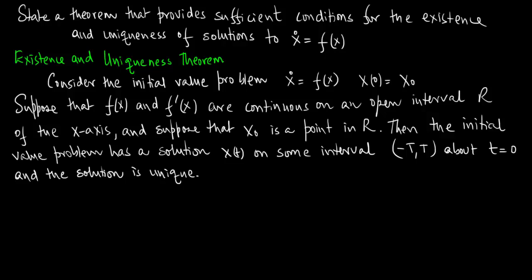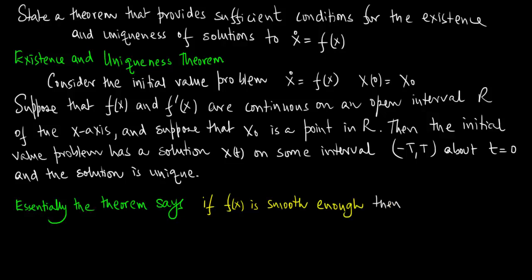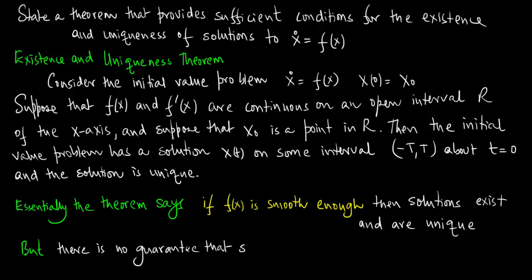Let us take a minute to just absorb this theorem. What does it really tell us? Essentially, the theorem says that if f of x is smooth enough then the solutions will exist and they will be unique. But there is actually no guarantee that the solutions will exist forever. This is a really important point to remember. We are talking about existence and uniqueness of the solution, but we may not be able to guarantee that the solution will actually exist forever — it may only exist for a short period of time.